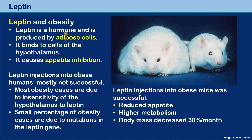Leptin is a hormone produced by adipose cells — fat cells — which are important for storing fat in the body. The fat cells release leptin into the blood, and it is transported to the hypothalamus in the brain, where it causes the inhibition of appetite.